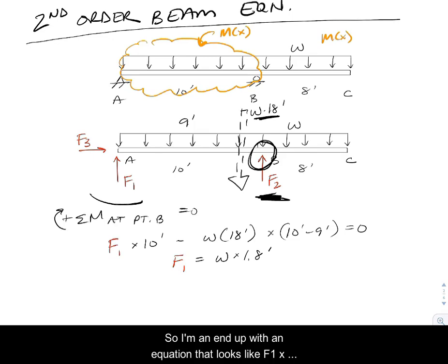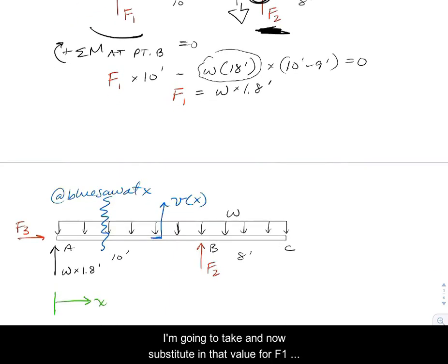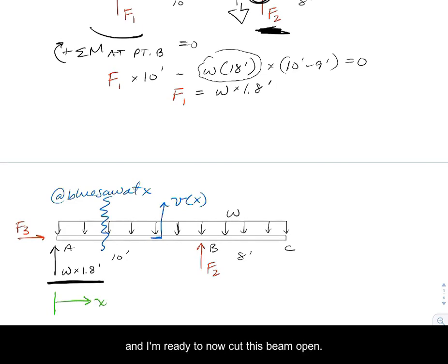I'm going to end up with an equation that looks like F1 times 10 feet, and I've got the statically equivalent representation of the distributed load. That would be located at 9 feet right at the centroid, so I have a lever arm of 10 feet minus 9 feet, or 1 foot. I can solve that pretty quickly for F1. Substituting in that value for F1 sitting right there, which is W times 1.8 feet.